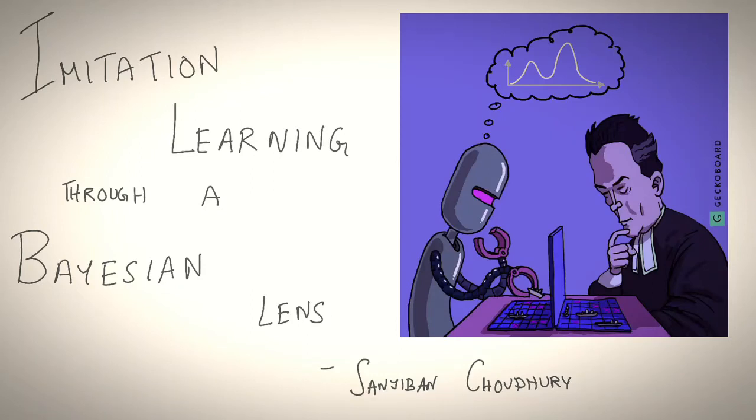Hey everyone, welcome to the seventh lecture in our series on imitation learning. I'm Sanchaman Chaudhary, a research scientist at Aurora and soon-to-be assistant professor at Cornell.